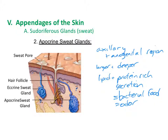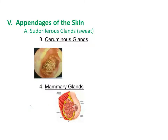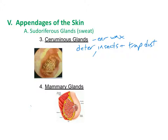Apocrine sweat glands become more active once an individual hits puberty, and their role is thought to include producing pheromones that attract mates. The ceruminous glands produce earwax, which is thought to deter insects and trap dust. Earwax is bitter, which is supposed to be unattractive to insects — though as shown in one picture, it doesn't always work. The last sudoriferous gland is the mammary gland, which produces milk and will be covered in more detail when we discuss the reproductive system.